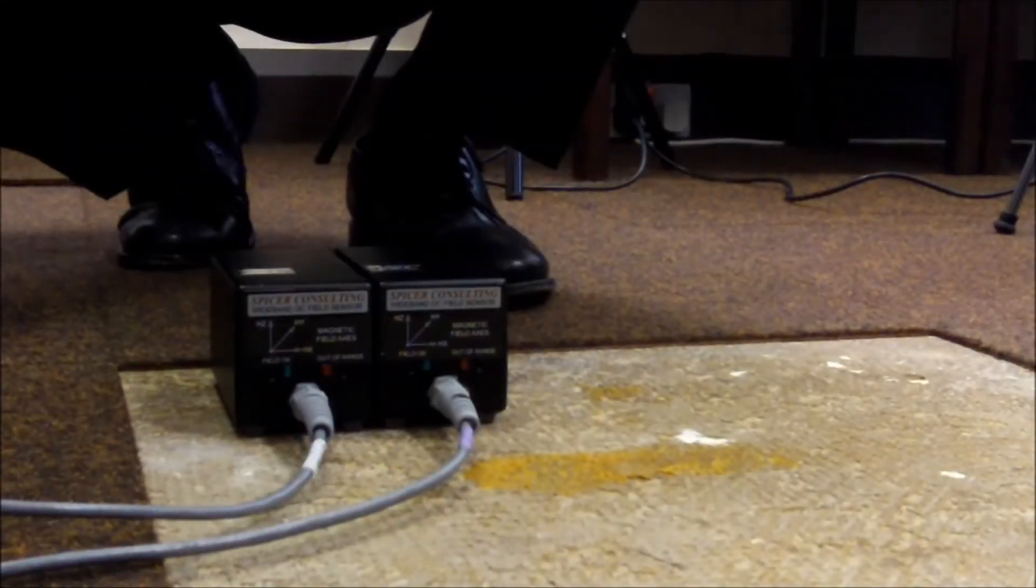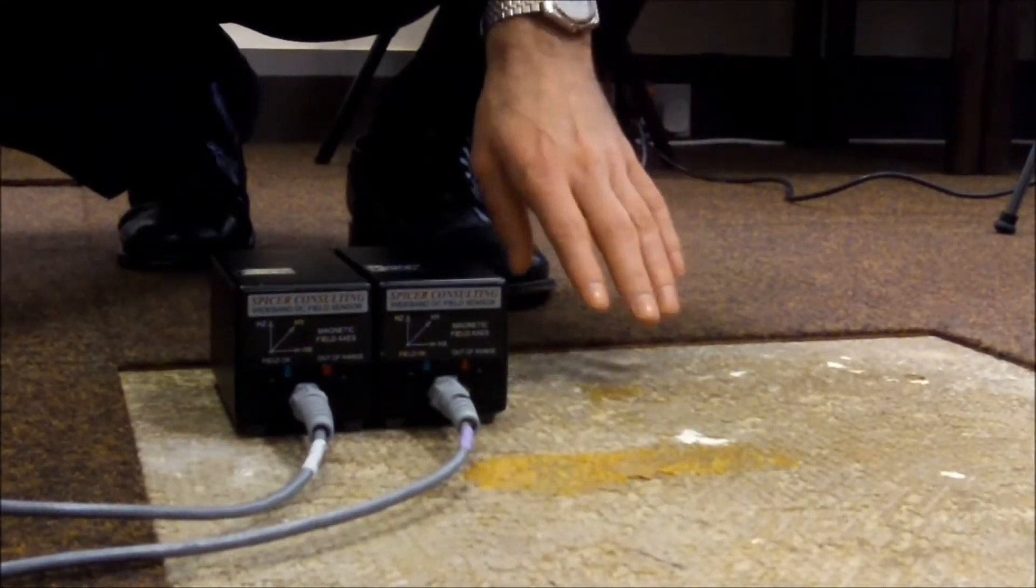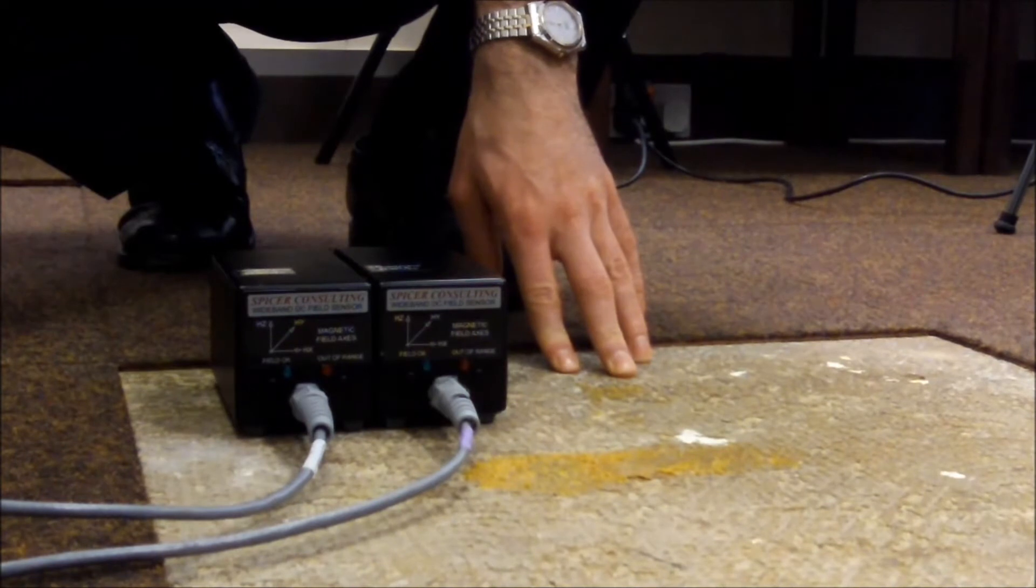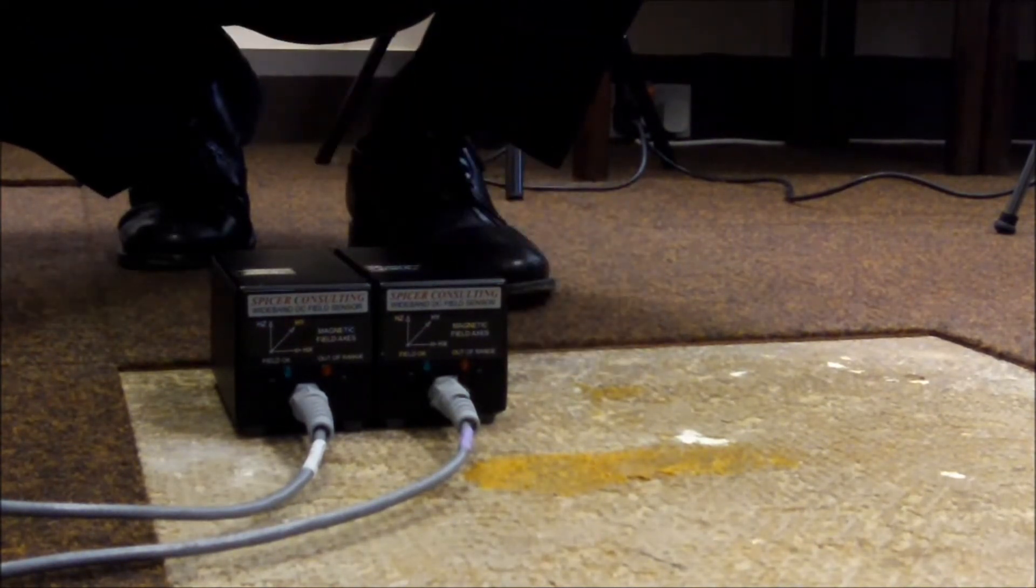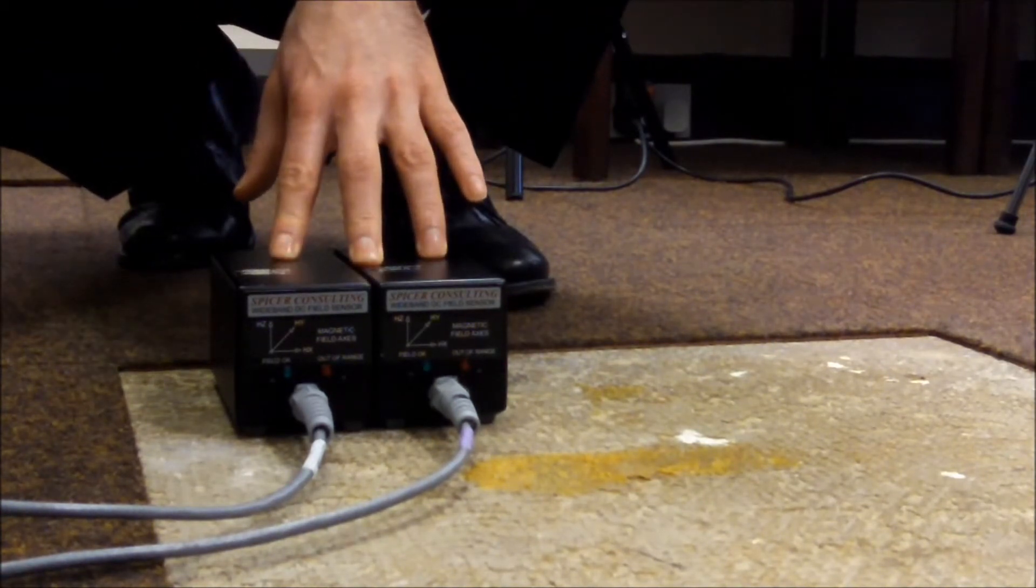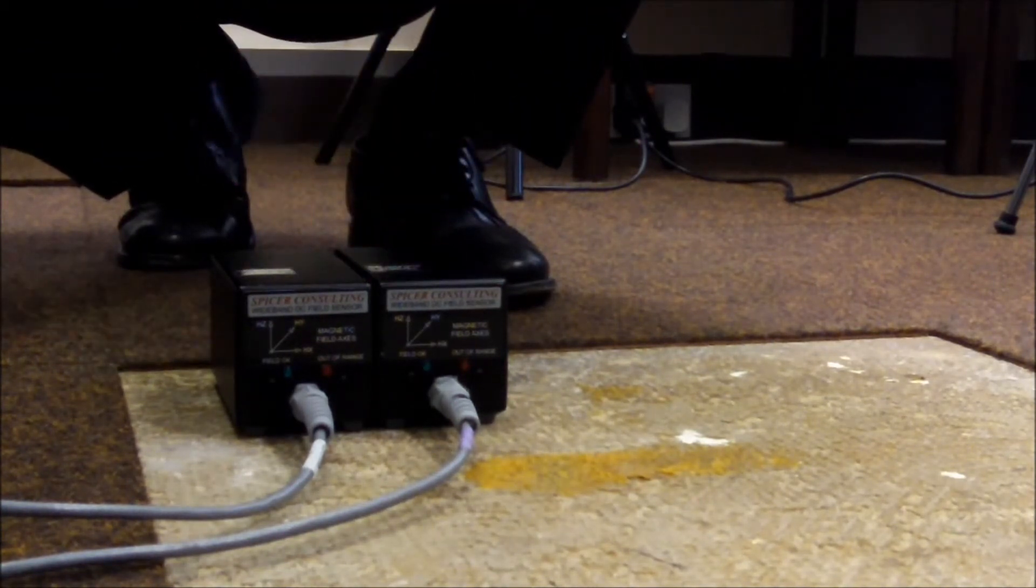This is the test area. We've exposed the concrete floor because later on when we put down accelerometers, they will need to be in contact with it. First of all, attach the two DC sensors. Put them next to each other and facing in the same direction so that they measure the same magnetic fields. The self-test checks for discrepancies between the two readings of the DC sensors.